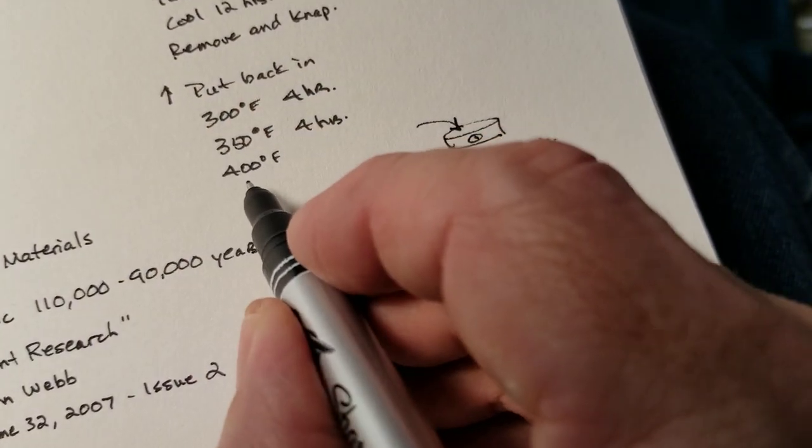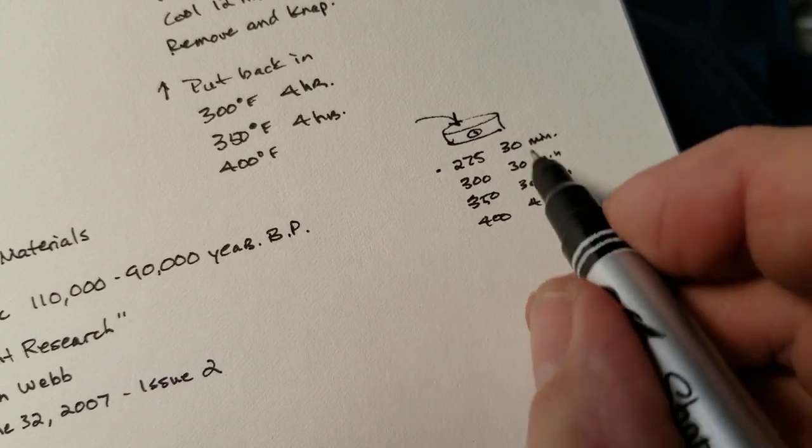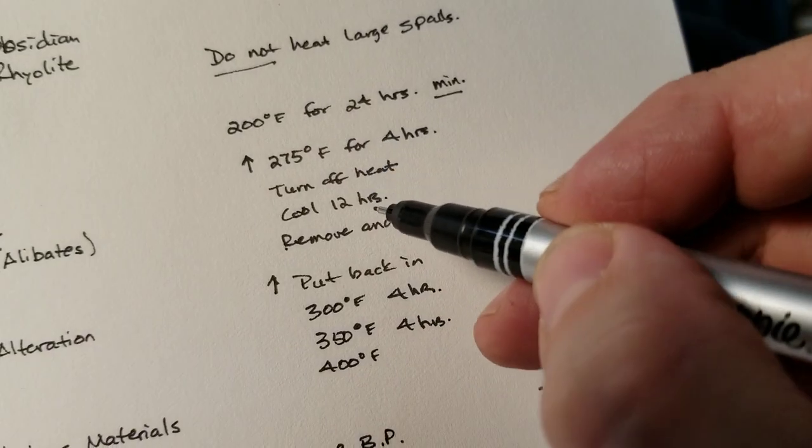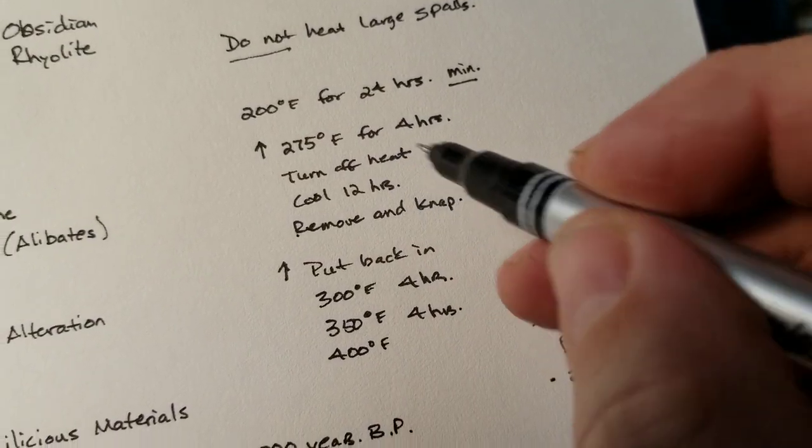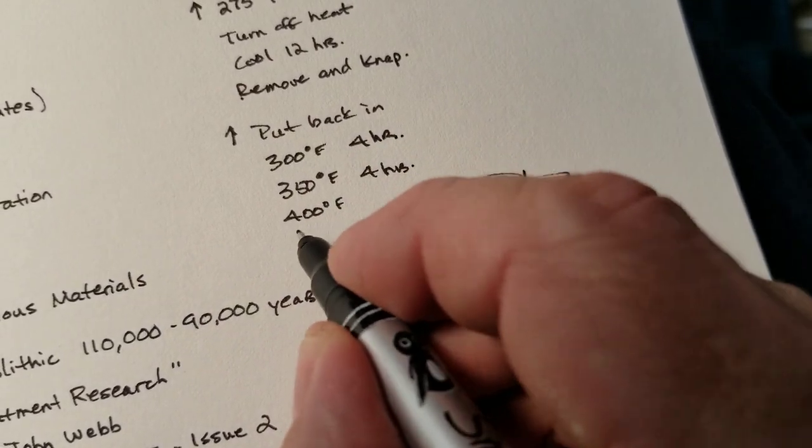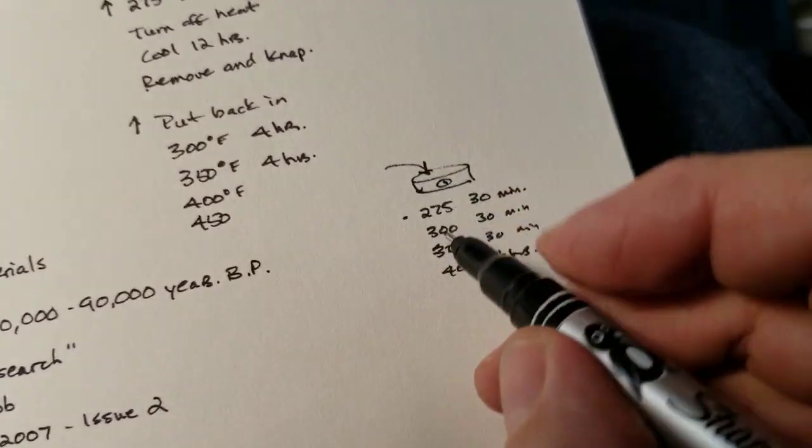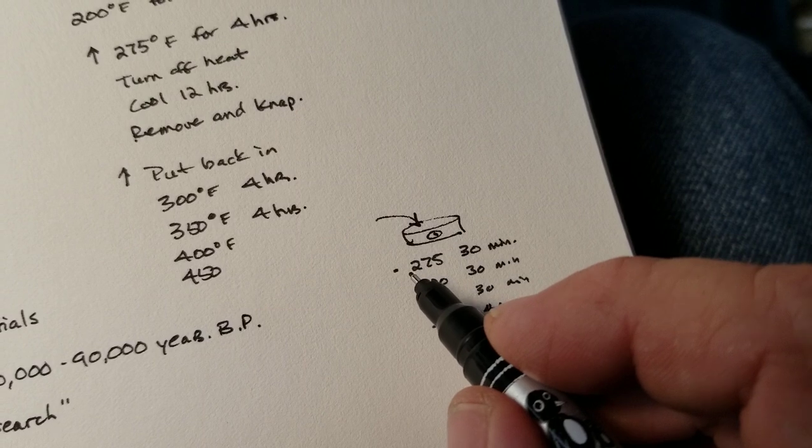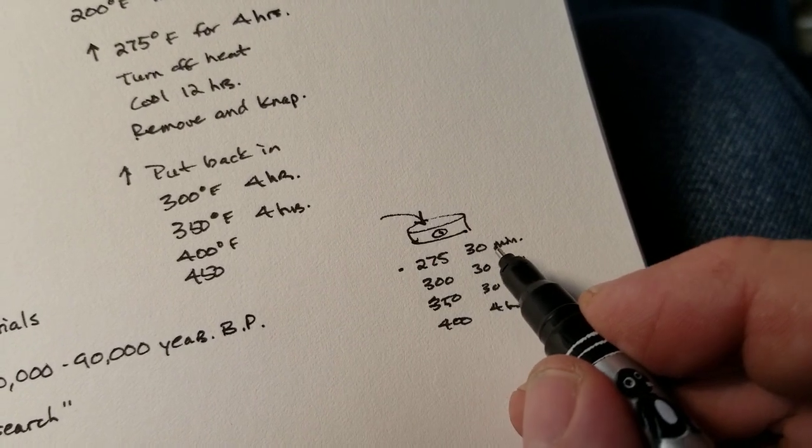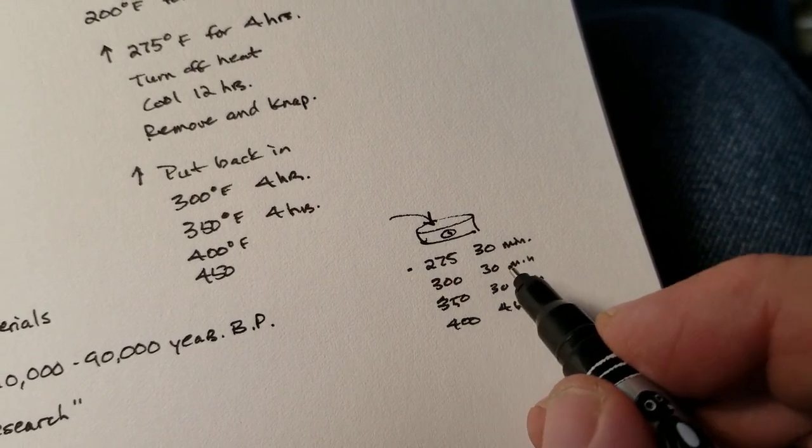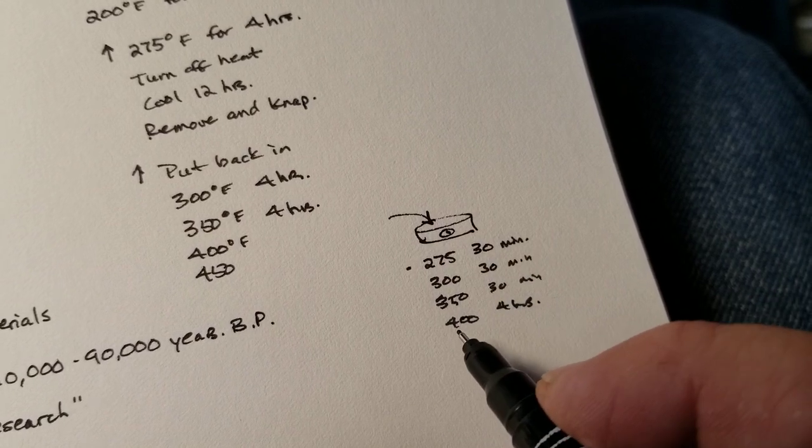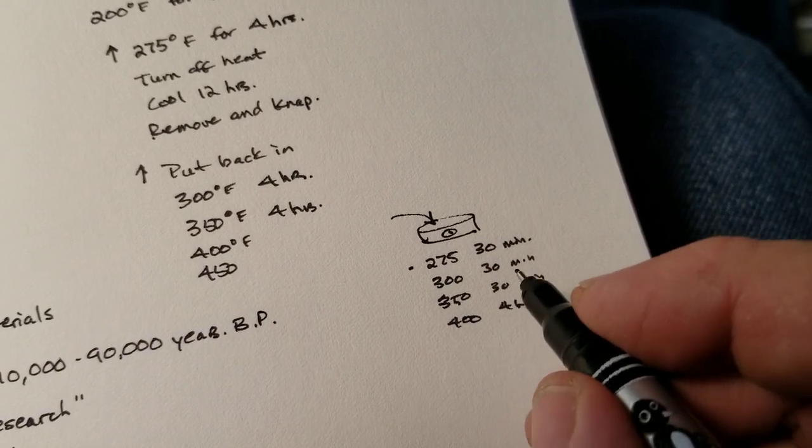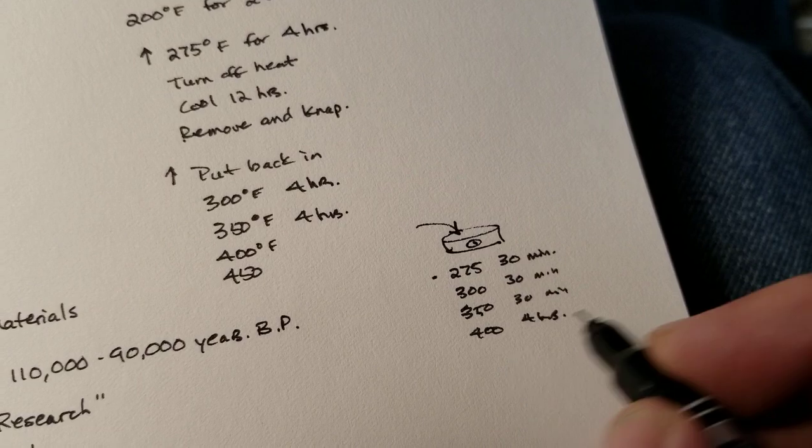Same procedure again. If it doesn't nap after you turn it off, cool for 12 hours, remove and nap. If nothing happens, you increase to 450. Which means you put it back in the oven, turn it to 275, wait 30 minutes, turn it to 300, wait 30 minutes, turn it to 350, wait 30 minutes, turn it to 400, wait 30 minutes in this case, and then at 450, you cook it for four hours.